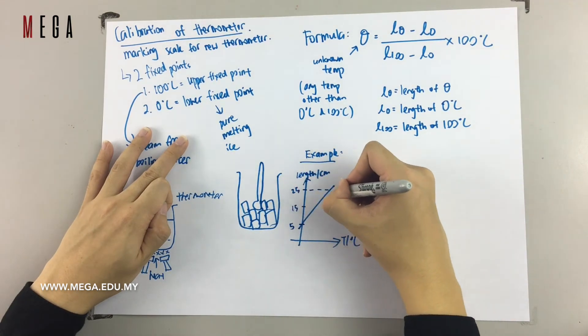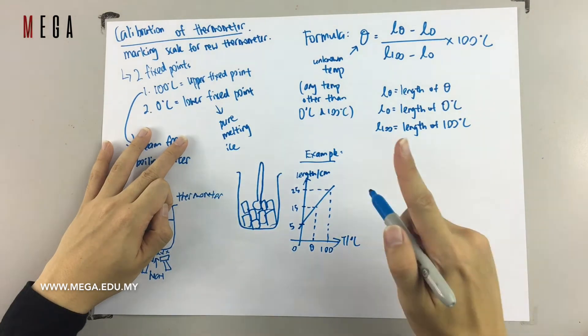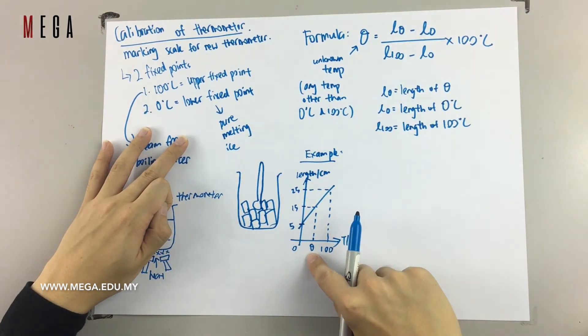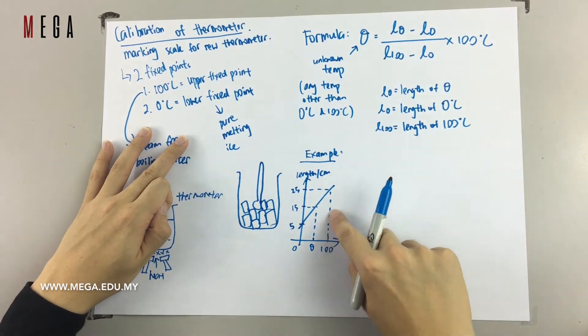So sometimes they might give you a graph. In this graph, they show 25 cm is 100 degrees, 15 is unknown, 5 is 0. So you're going to find the 15 cm. How are you going to find it? You just fill in every single detail into the formula.